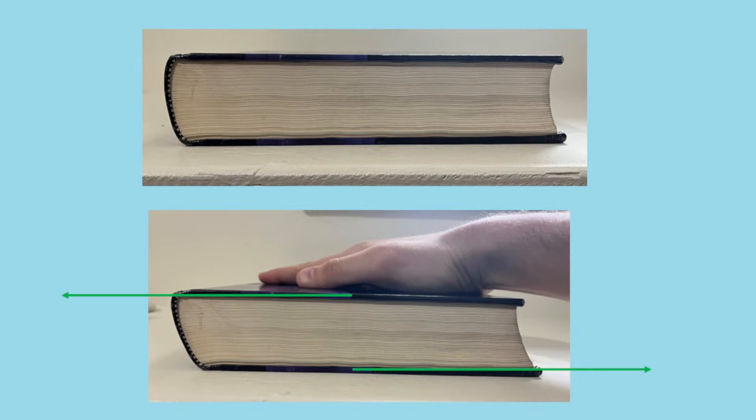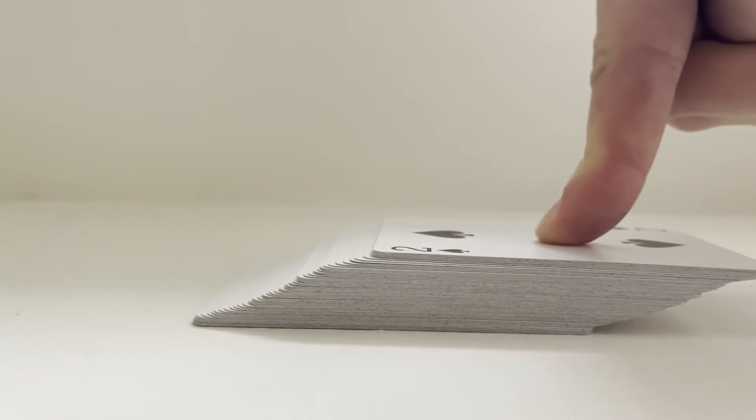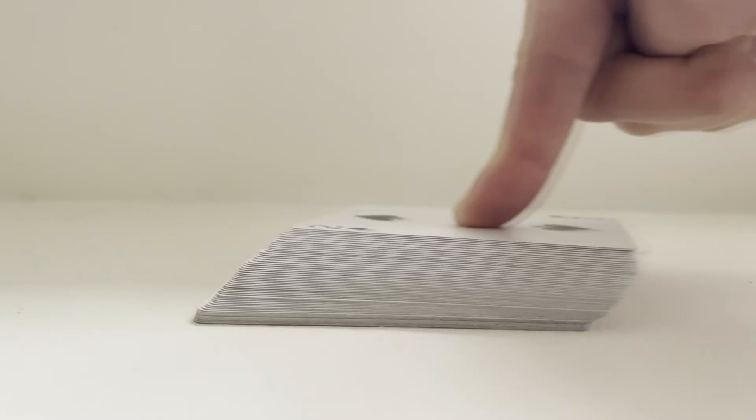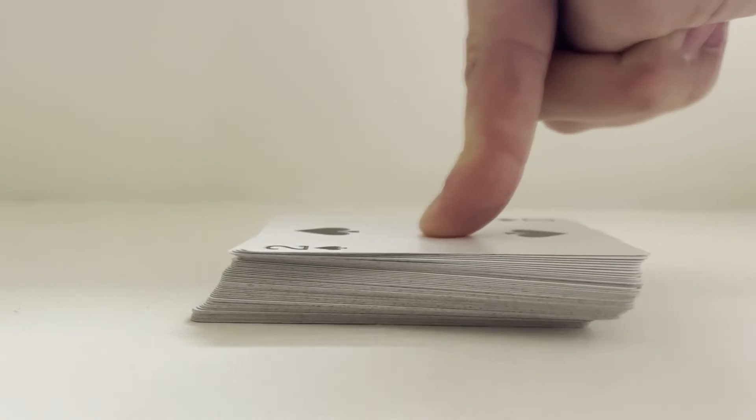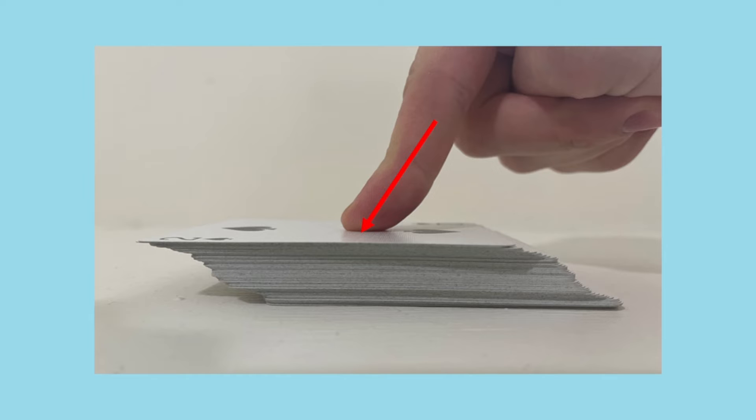Another visual example I like a lot is a deck of cards. This short video shows my finger pressing on the top of the deck and moving the top card back and forth. This affects each of the cards below it to a lesser and lesser degree, once again showing that diagonal shear.